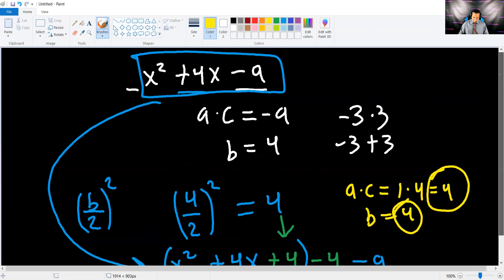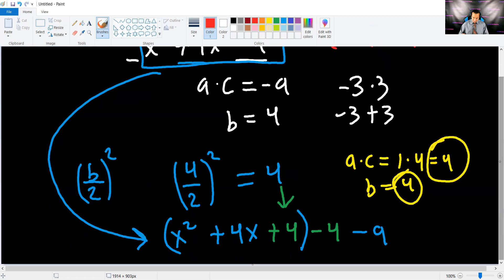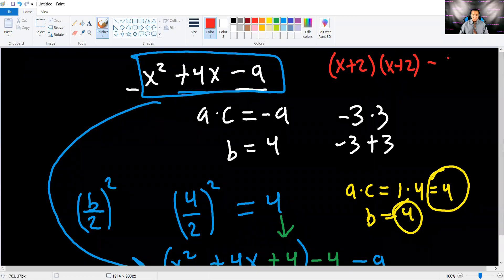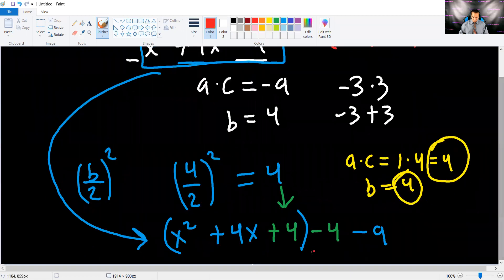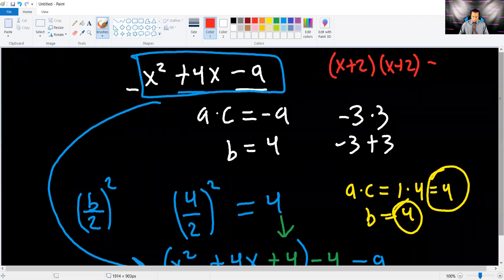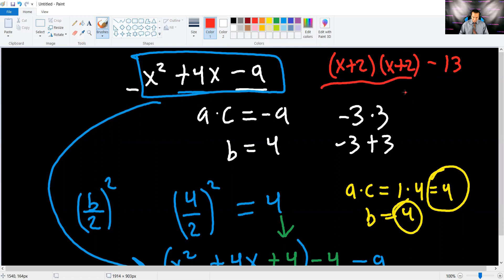So look at the top right corner because it's getting messy. You have x plus 2 times x plus 2 minus 4 minus 9. Try to do this before I continue in your head. You should have gotten negative 13. And look, these are the same. So in the end, you're going to get x plus 2 squared minus 13. And this is easily graphable.